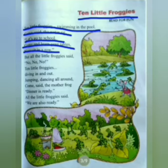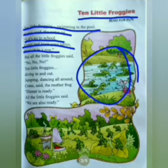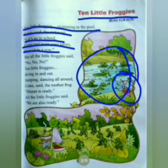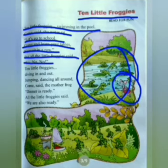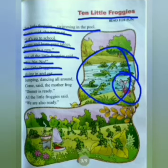10 little froggies. There are 10 little froggies. But all the little froggies said no, no, no — we don't have to do the table. 10 little froggies diving in and out, jumping and dancing all around.